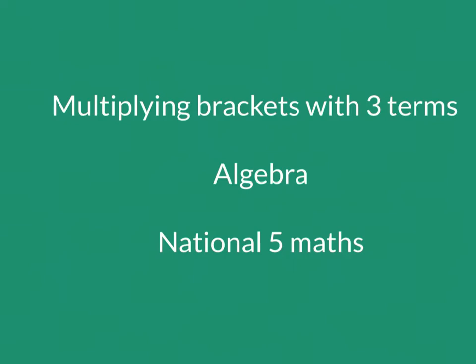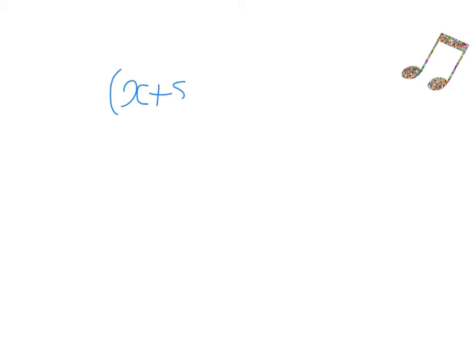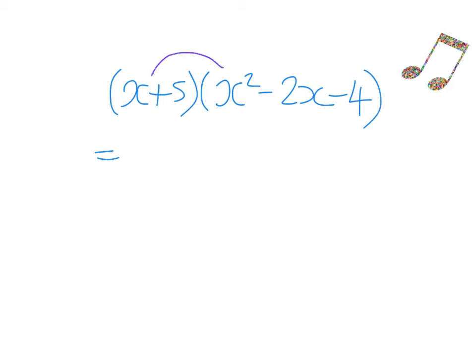Today we're going to be multiplying two brackets together, looking at brackets which have three terms in them. We're going to start with x plus 5 in the first bracket, multiplied by x squared minus 2x minus 4. Exactly the same principles apply when you've got bigger brackets — we just need to be systematic. First, we take the x and multiply everything in the second bracket by x, then we take the 5 and multiply everything by the 5.